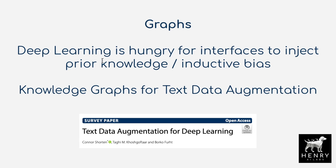Graphs are one of the most interesting interfaces for injecting prior knowledge or inductive bias into deep learning. Beyond naturally graph-structured data like molecules or social networks, we can add graph structure to text data rather than just modeling it as a continuous stream with GPT-3 or Siamese BERT. Knowledge graphs may be a huge step in having label-preserving transformations for text data, which is the key driver of progress in image data augmentation — something harder to achieve in NLP.